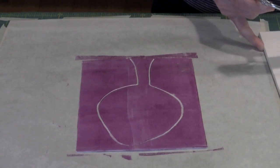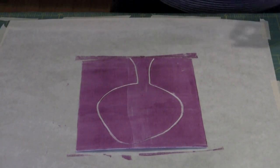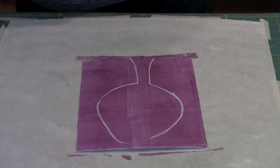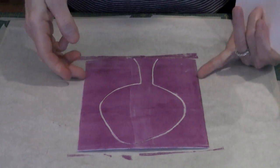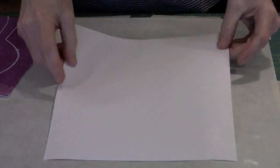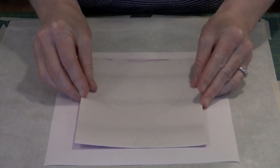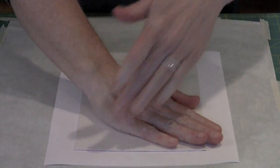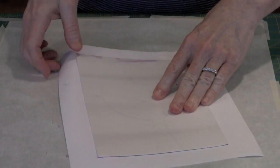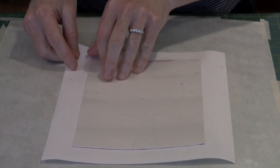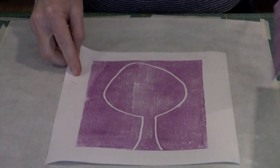I'm just going to ink up the brayer so that there's even coverage on it. Now that this is inked up, what I'm going to do is take a piece of paper and I'm going to mist it lightly with water. That's just going to help the paint to adhere. And it's as simple as putting this on here and pressing down. And then you lift up, and there's your image.